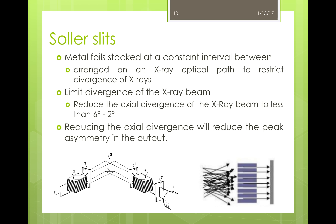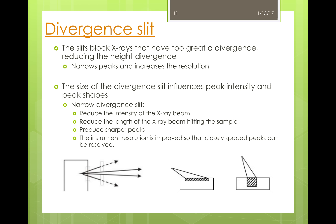Let's take a closer look at the Soller slits. These slits are metal foils that are stacked in parallel with constant spacing. The job of the slit is to reduce the angular divergence of the X-ray beam and to keep it on the correct path. By doing this, the peak asymmetry of the signal will be greatly reduced, so you'll get better data. The divergent slit is used to block X-rays that have too great of a divergence. By reducing the spread of the beam, known as the height divergence, the resolution of the output is significantly increased. The divergent slit comes in a variety of sizes, which affect the peak intensity and the shape of the output. For example, a narrow divergent slit will reduce the intensity of the beam and the length of the X-ray beam, produce sharper peaks, and allow for greater resolution than a wider divergent slit would.